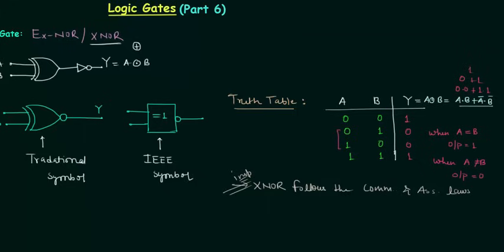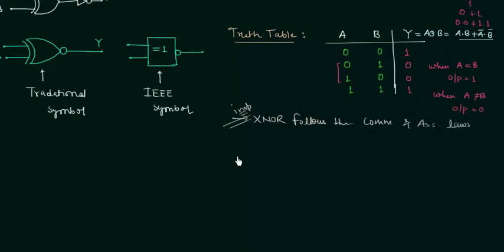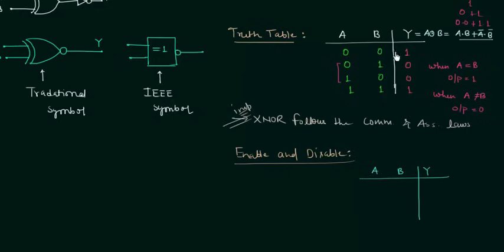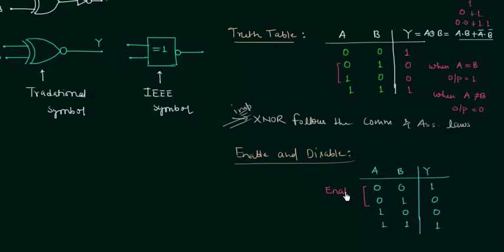Now we will move to enable and disable for the XNOR gate. To find out enable and disable we make the truth table. When A is 0, output Y is 1 when B is 0, and Y is 0 when B is 1. So the input 0 acts as an enable, and Y is the complement of B — acting as an inverter.